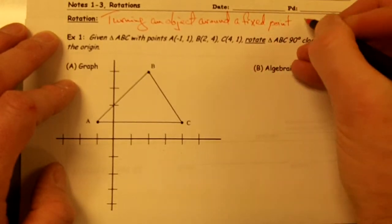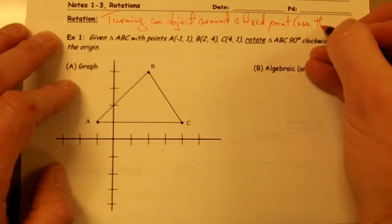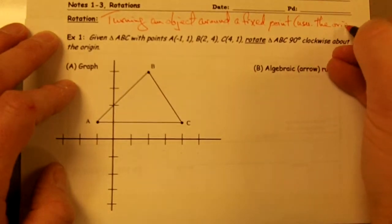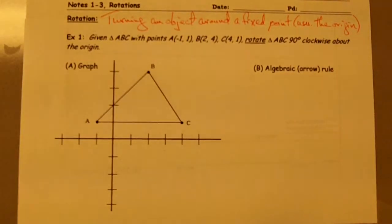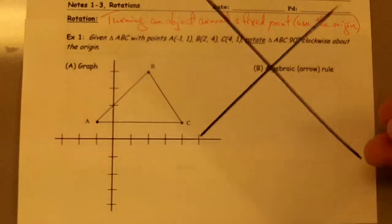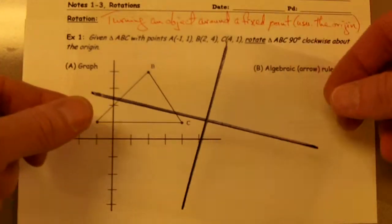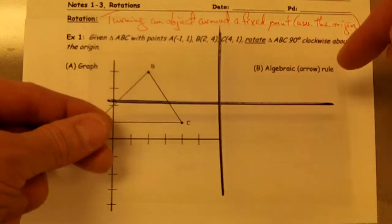Usually that point is going to be the origin. That's the rotation point, the point we're going to be turning our figure around. So let's take a look at how we would do this using one of these transparency papers with a set of x-y axes drawn on it.